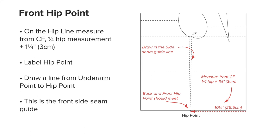Find the hip point: calculate a quarter hip measurement plus one and a quarter inches or 3 centimeters, and use this to find the front hip point measured from center front along the hip line. Join front underarm point and front hip point with a straight guideline for the provisional side seam.